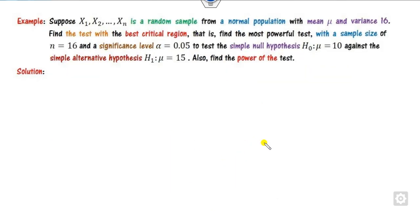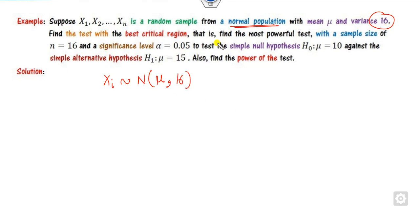Now look at one more example. In this case it is a normal distribution — Xi follows a normal distribution with mean μ and variance 16. You have to find the best critical region, that is the most powerful test, with sample size n = 16. The level of significance is given. The hypotheses are given. Also, you want to find the power of the test, which is 1 minus β.